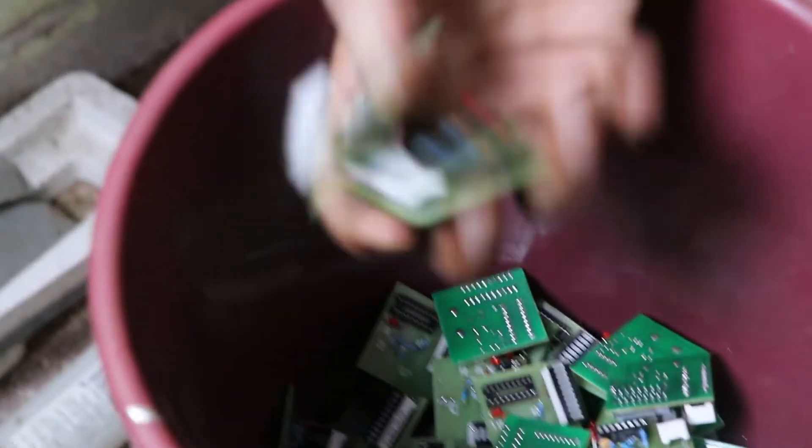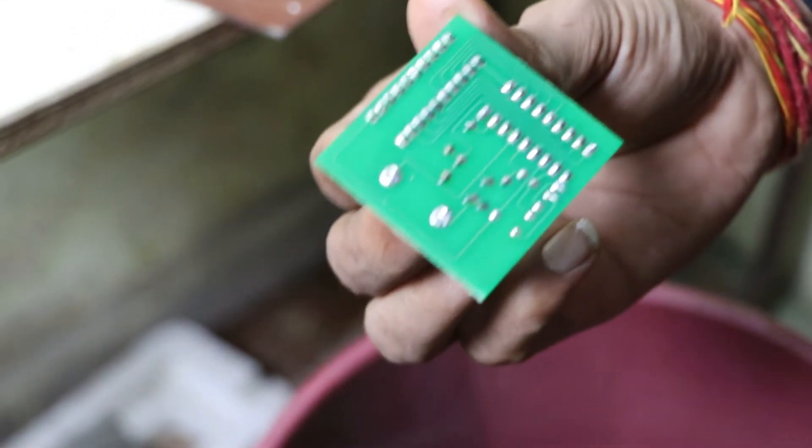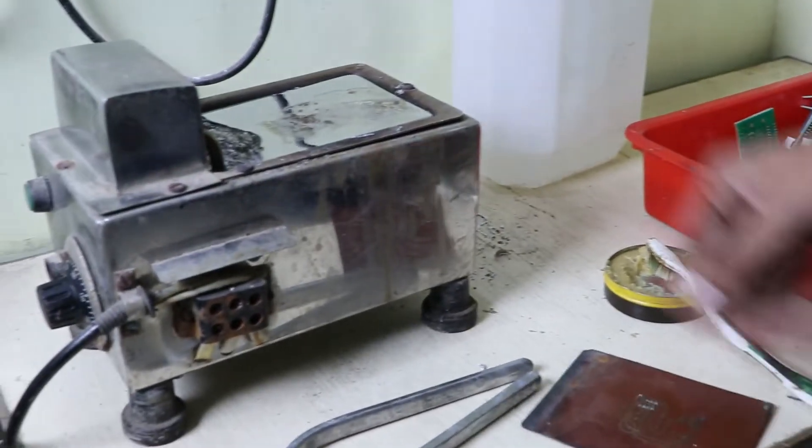These are PCBs I've already prepared. You can see the clarity of the joints - they're very clear because I applied flux. Without flux, the joints won't be clear as the solder won't stick properly. Soldering flux is very important.